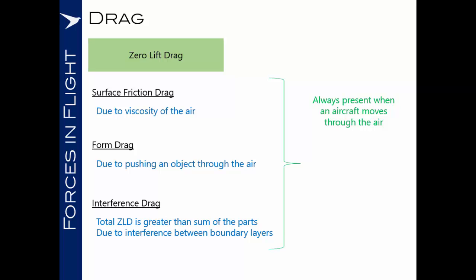These three components, the total zero lift drag, is always present when an aircraft or any other object moves through the air, and it is proportional to the square of the speed.